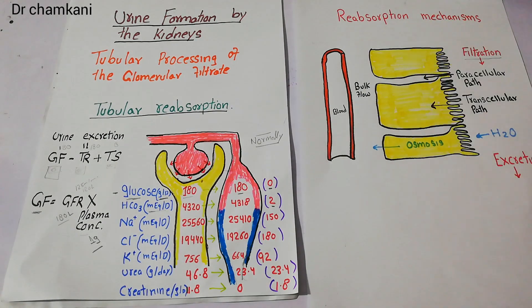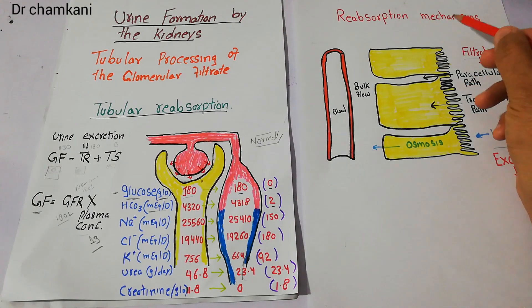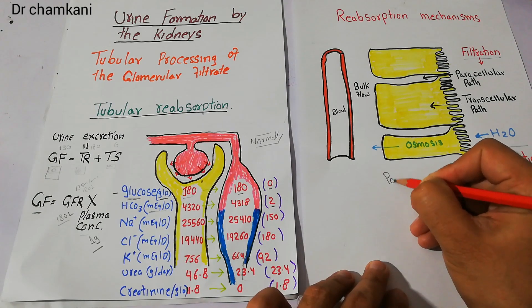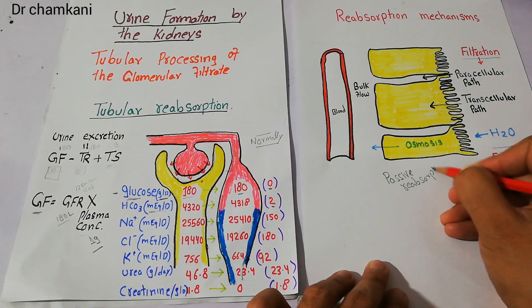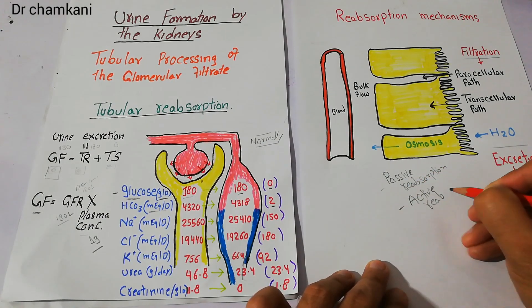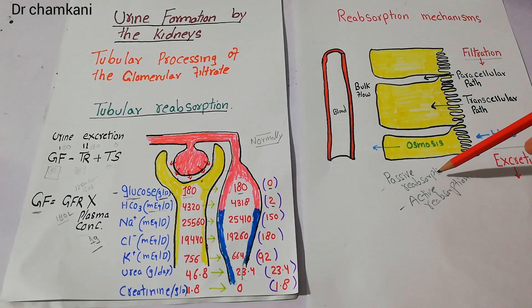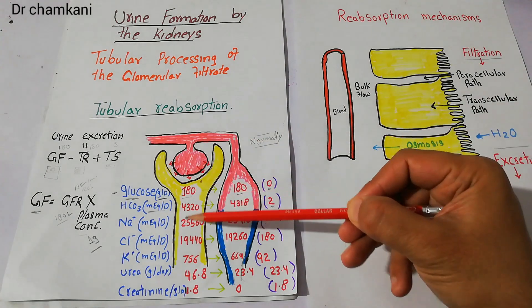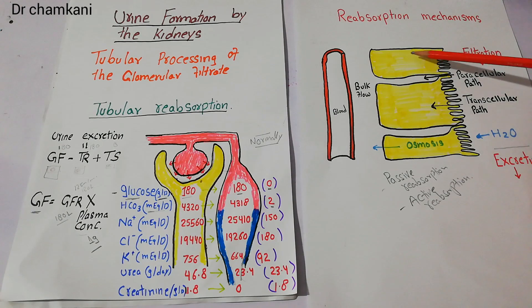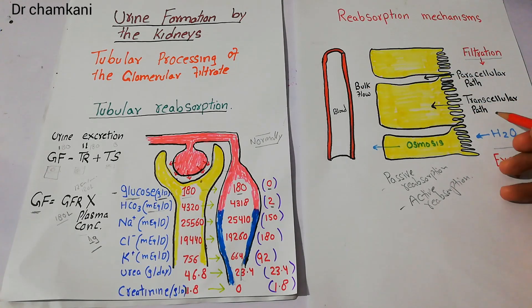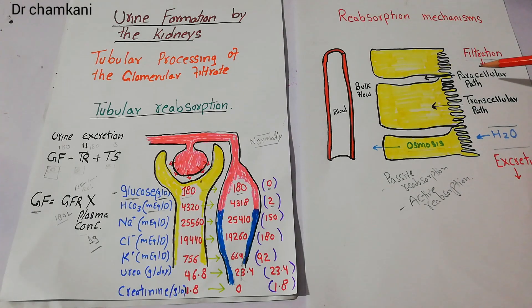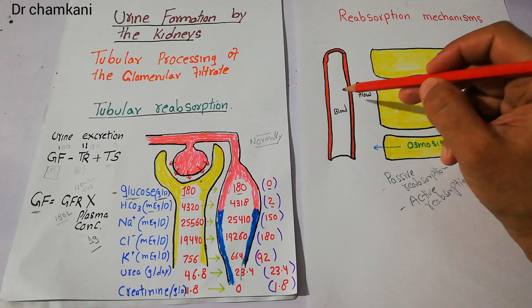The mechanisms used for reabsorption may include passive and active transport — passive reabsorption and active reabsorption. In passive reabsorption, substances move directly from the tubular lumen into the peritubular capillaries because their concentration in the proximal tubule is high and their concentration in the tubule cells and blood is low. They naturally move from high to low concentration. For water, this movement is known as osmosis, which is a passive reabsorption mechanism. Active reabsorption uses energy, for example by the sodium-potassium pump.